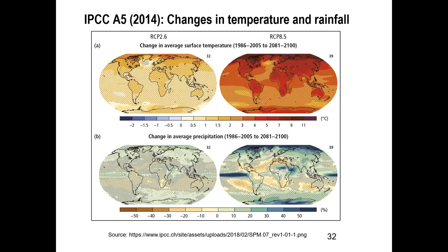There are changes in temperature and predicted changes in rainfall. The world by 2100 is expected to be greatly warmer — moving from minus 2 degrees, which is extremely cold, to about 11 degrees. You can see and relate to where Africa is and what is going to happen there. There will also be changes in average precipitation — where it will increase and where it will decrease. These are some of the trends and drivers we need to be aware of when talking about climate change, carbon markets, and climate markets.